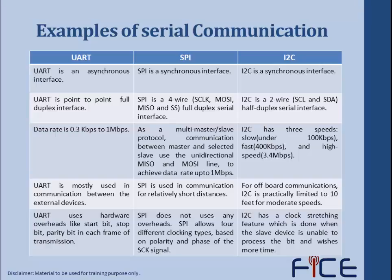The data rate through UART is between 0.3 kbps and 1 Mbps. SPI operates as a multi-master or slave protocol. Communication between master and selected slave uses unidirectional MISO and MOSI lines. To achieve a data rate of 1 Mbps in SPI, these unidirectional master-in slave-out and master-out slave lines are used for communication between master and slave.